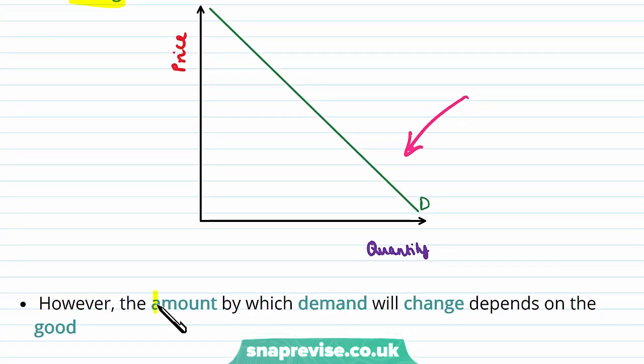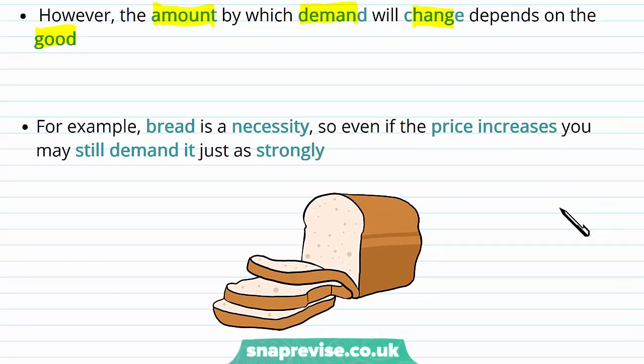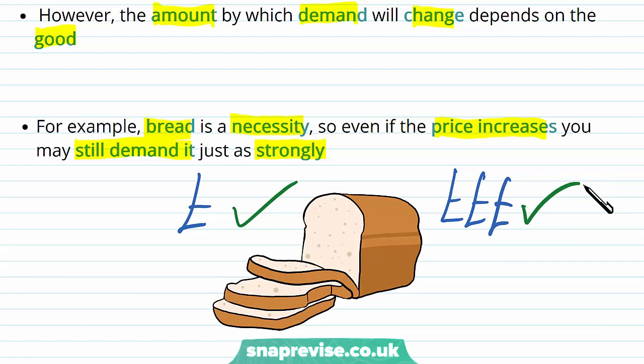However, the amount by which demand will change is going to depend on the good itself. Let's start off with an example. Bread is a necessity, so even if the price increases, you may still demand it just as strongly. If the price of bread was very cheap, you're going to buy it. But because it is so important to your diet, if it increased in price significantly, you might still end up buying it. So say the price of the bread was £1.50 a loaf, but then it was £5.50, you would still end up demanding it because it's a necessity.